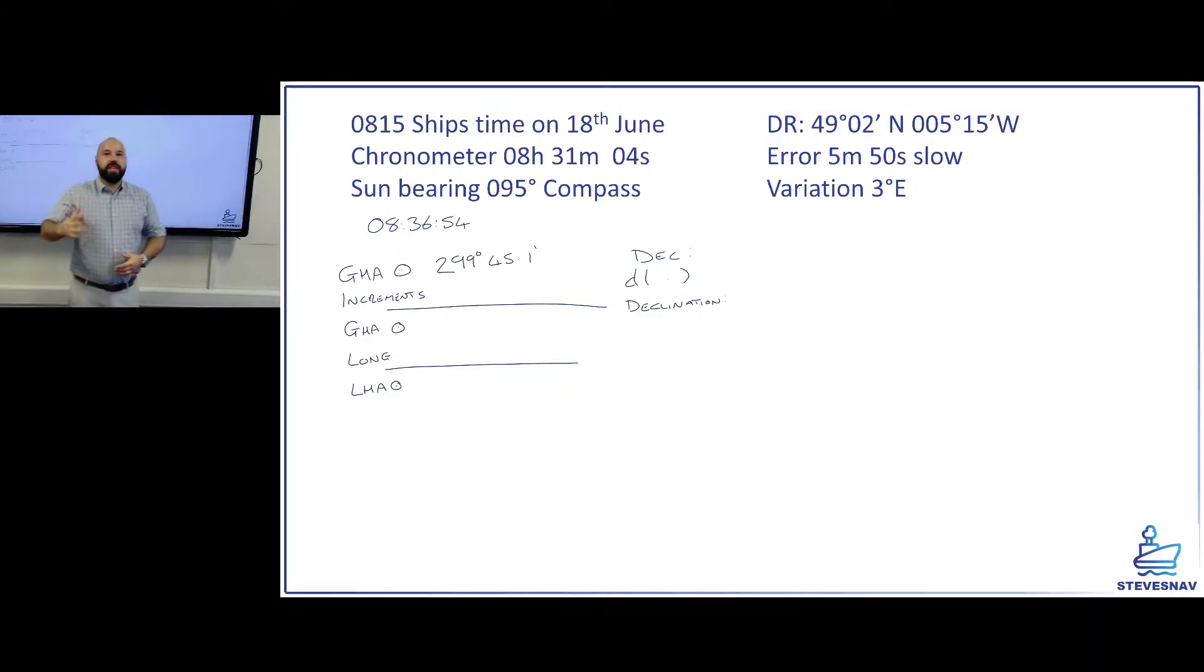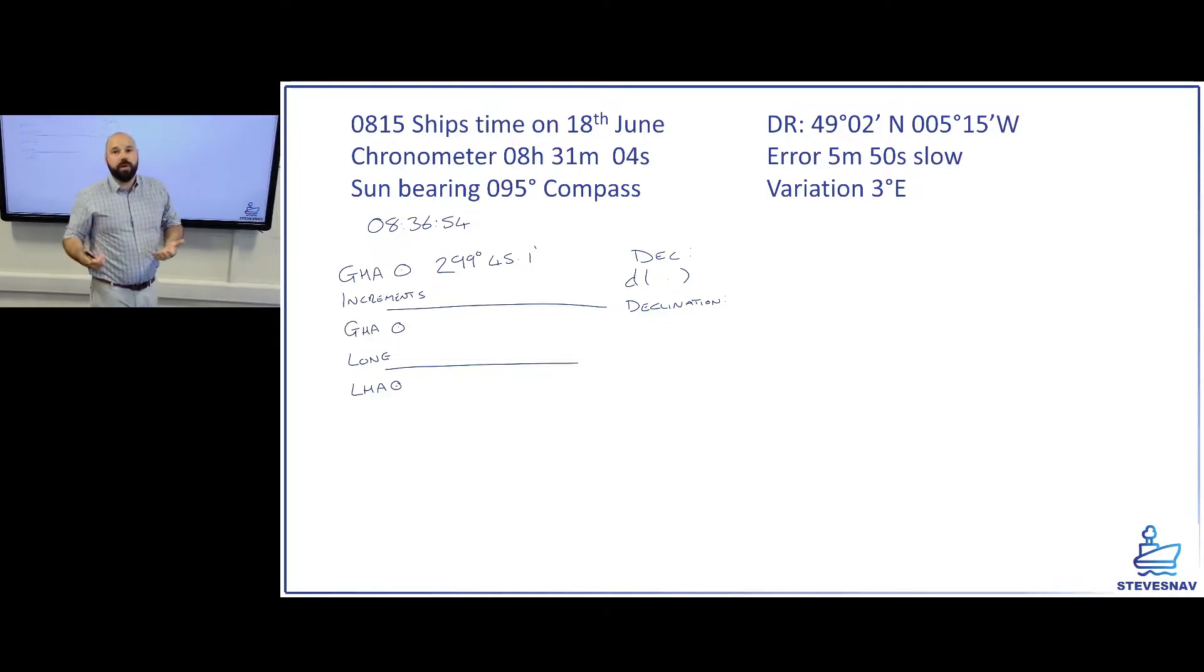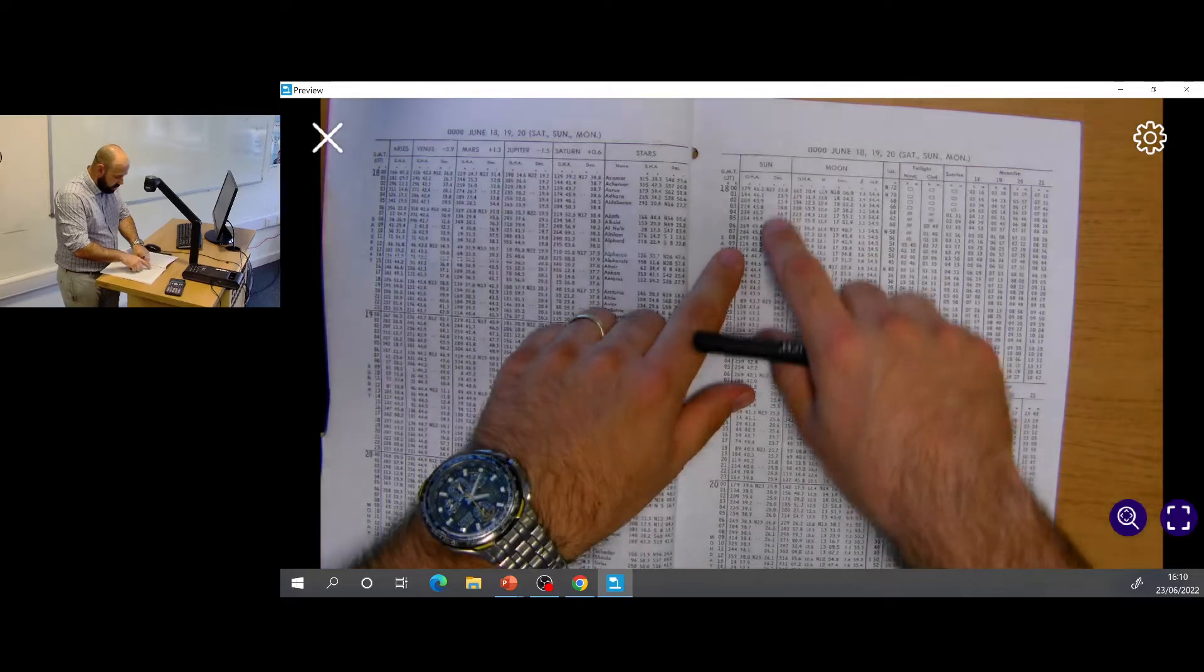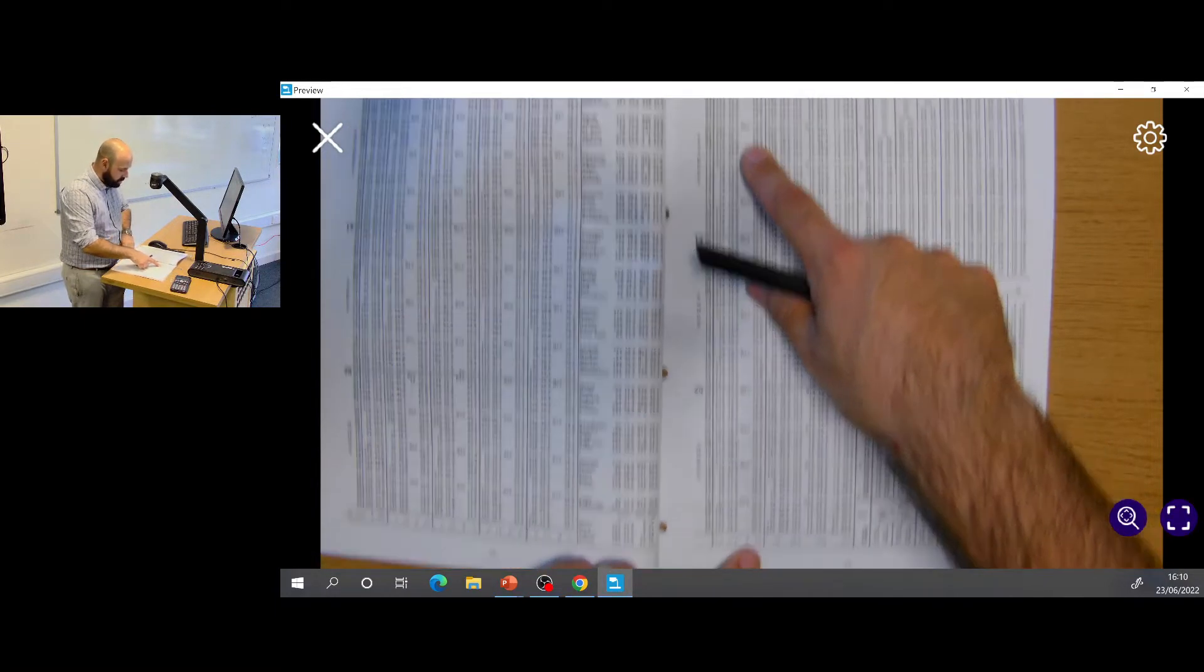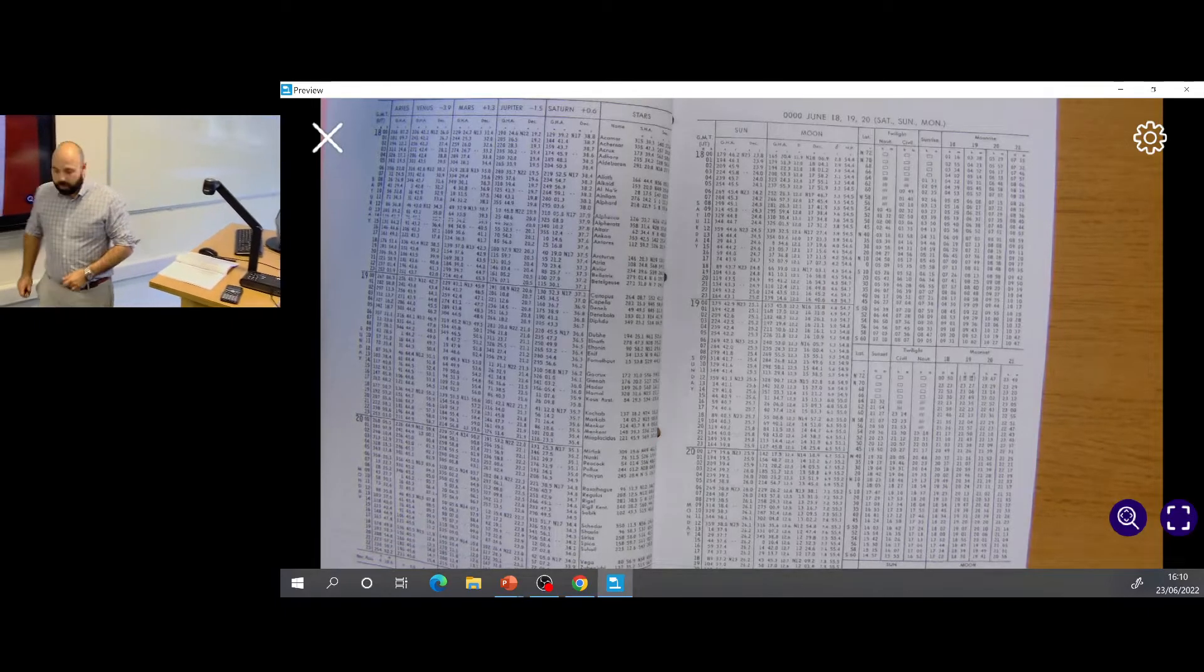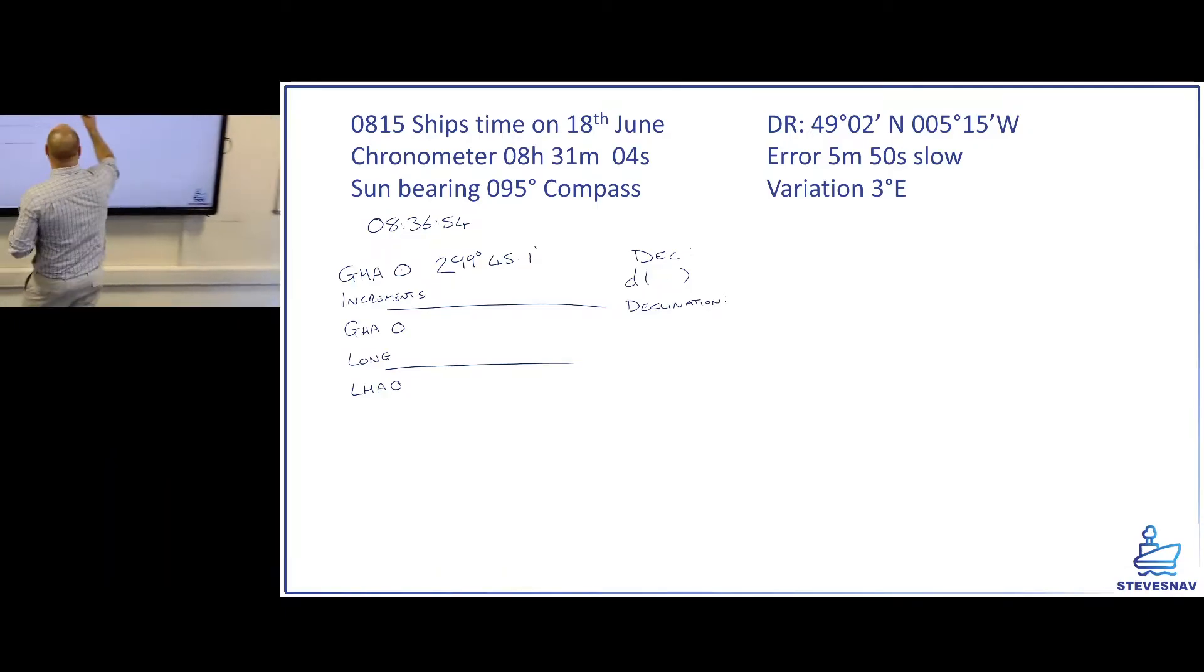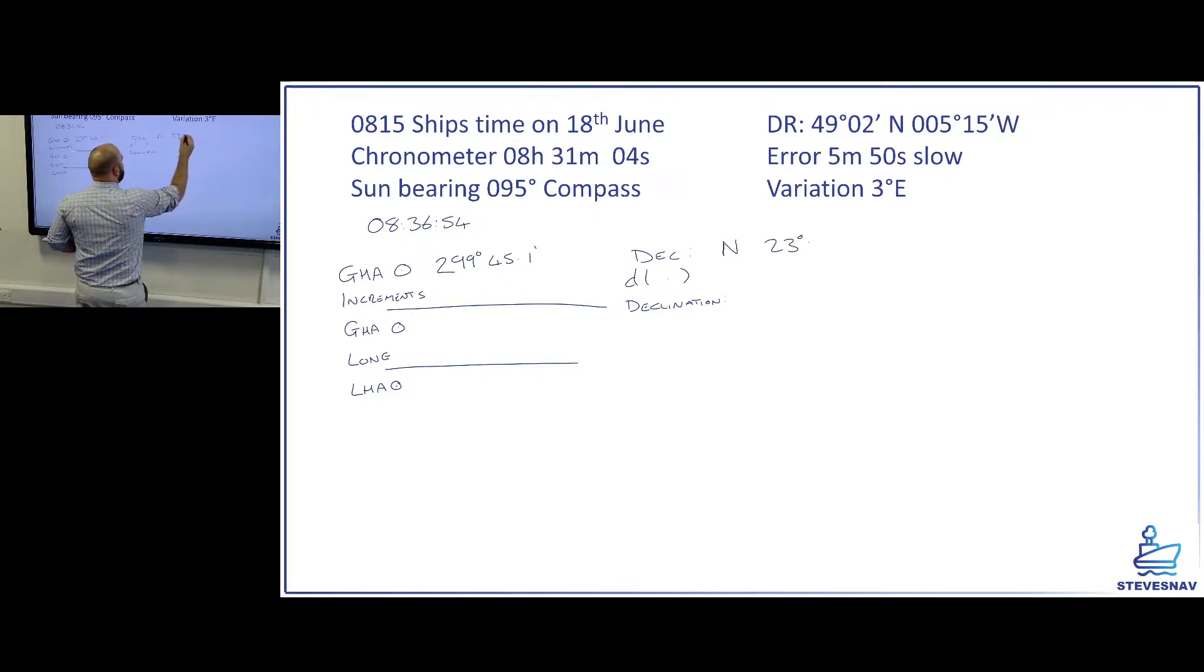Now you could at this point go straight into declination or you could go straight through your increments. I'm going to go across the declination for the simple reason that while I'm on this page, I'm going to get all the information from it in the almanac. Because if I'm going backwards if you're anything like me, at some point you're going to make a mistake. So what I'm going to do now is go back into my almanac and get the declination information while I'm here. So I can see it's North 23°24.3' and I can see the D correction there at the bottom is 0. So North 23°24.3'. My D was 0, so that's obviously going to be 0 on the interpolation for 0, which gives me a declination of North 23 degrees 24.3 minutes.